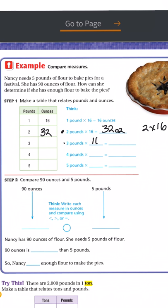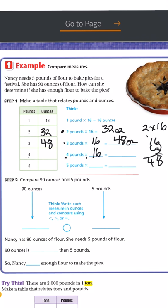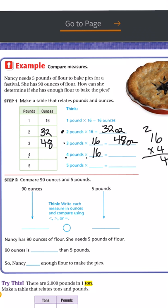Three pounds is 48 ounces. Then four pounds times 16: four times 6 is 24, four times 1 is 4 plus 2 is 6, so I get 64 ounces. Writing 64 in my table.